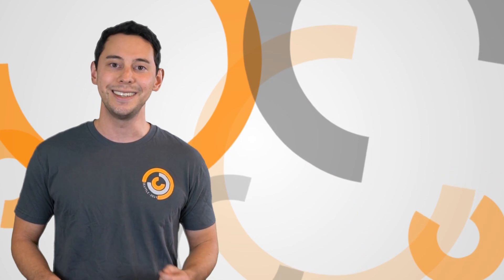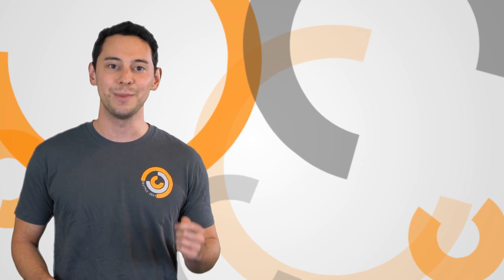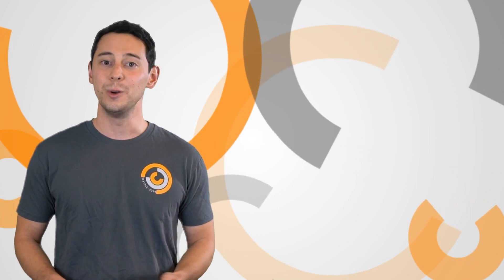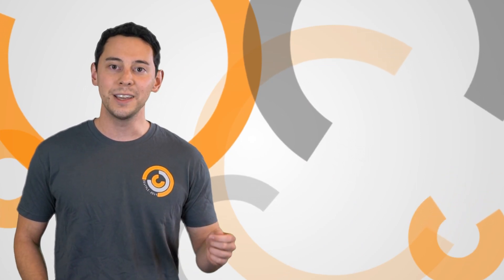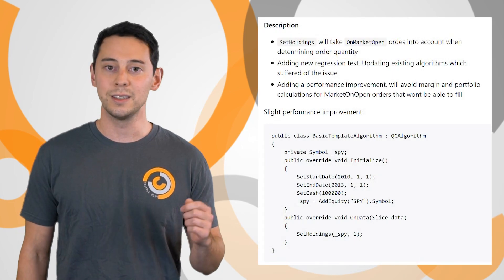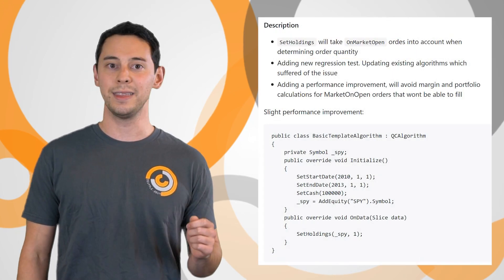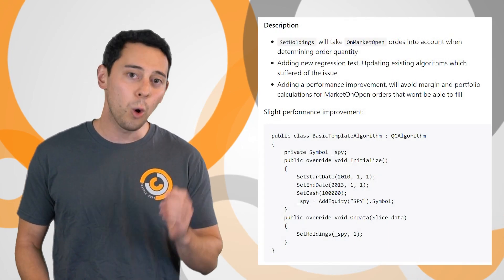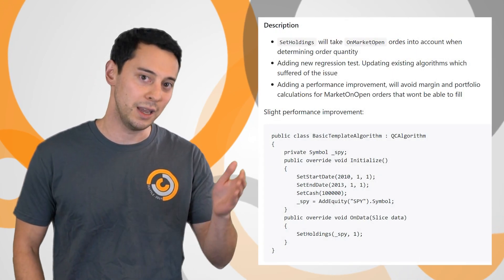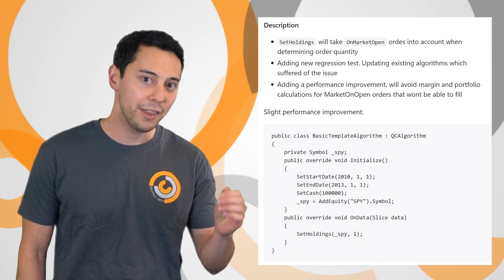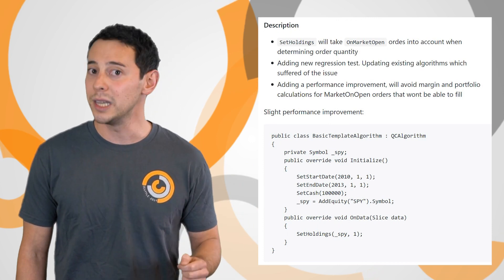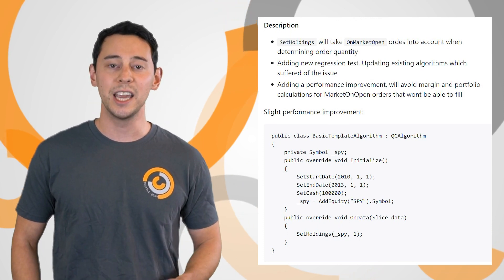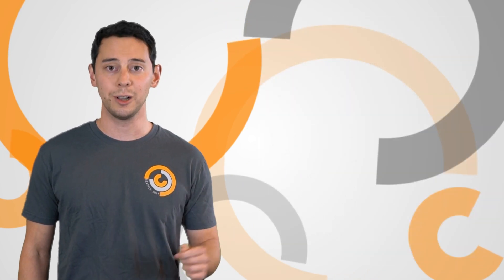Our engineering team is always making improvements to Lean. Recently, we fixed a bug with the set holdings method, so orders will be placed according to margin impact rather than symbol list order. This makes cash allocation more logical.